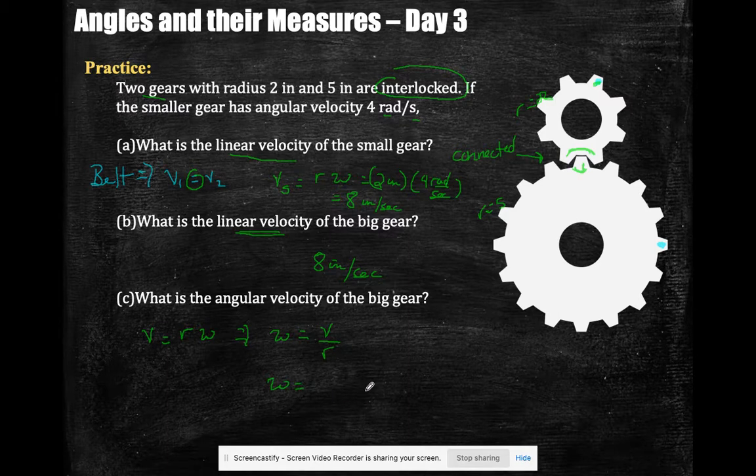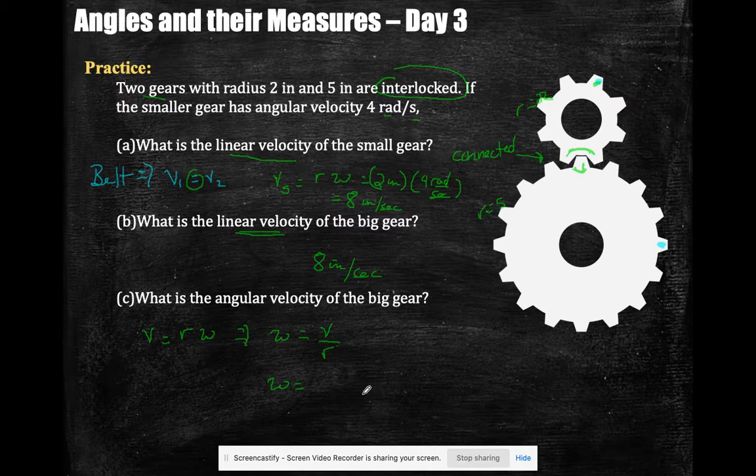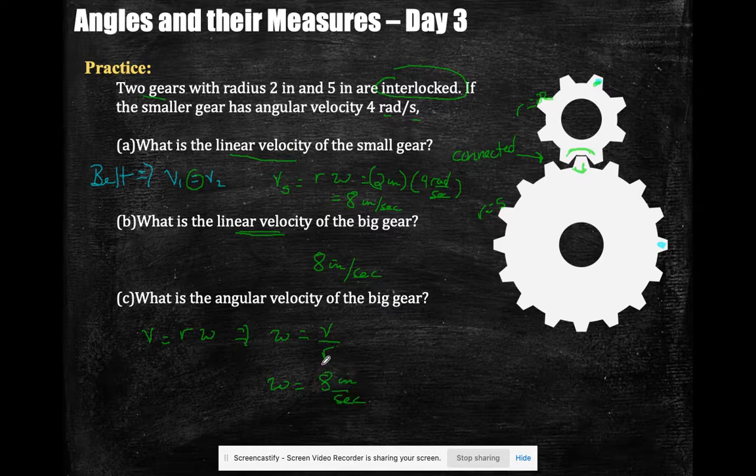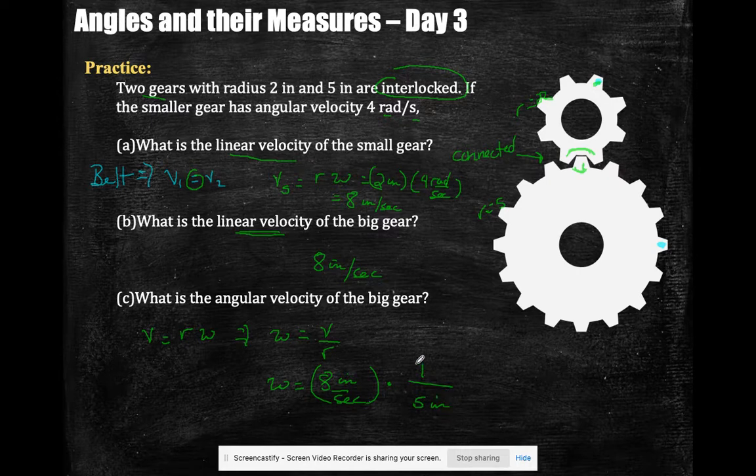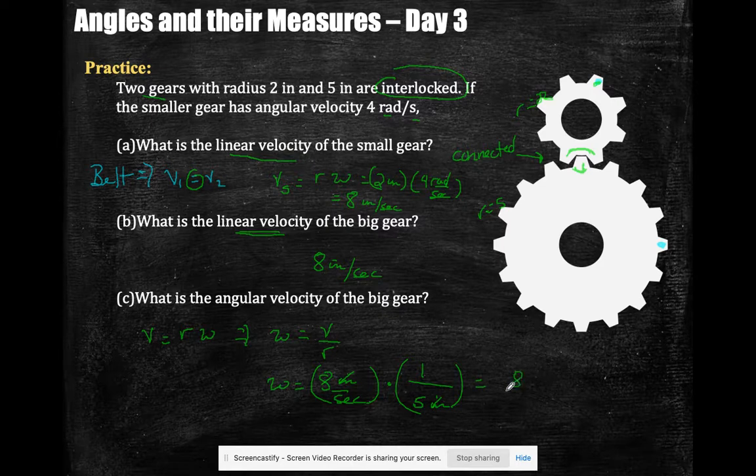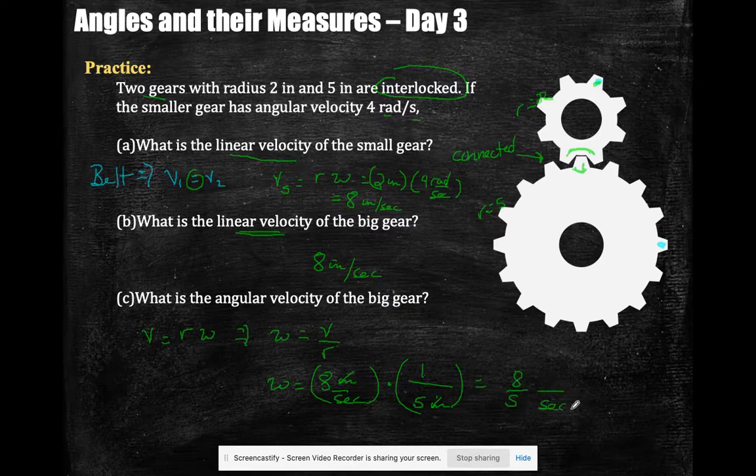Linear velocity over the radius. So what is the linear velocity of the big guy? Well, the linear velocity of the big guy is the same as the little one. So I have 8 inches per second times one over the radius, and the radius of the big gear is 5 inches. Notice the inches cancel out, and I get 8/5 radians per second.